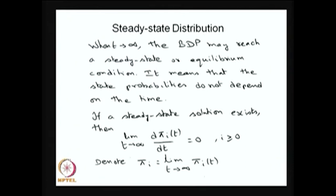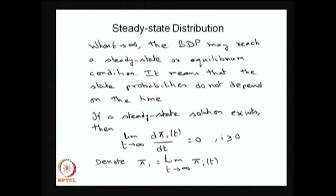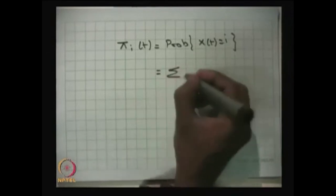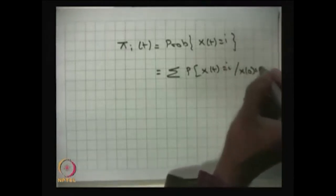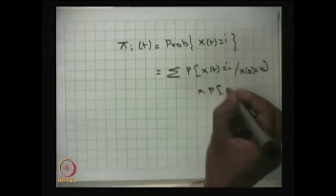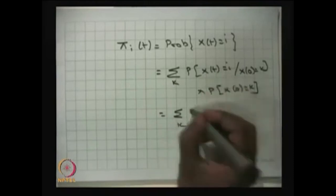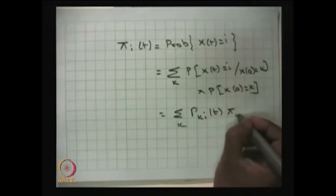I can write pi_i as the limit t tends to infinity of pi_i(t). This is different from the conditional probability p(i,j) of t discussed earlier. Using p(i,j) of t one can find pi_i(t) — that is the probability that the system will be in state i at time t. This equals the sum over k of the transition probability p(k,i) of t multiplied by the initial probability that the system was in state k at time 0, which is the initial probability vector element.